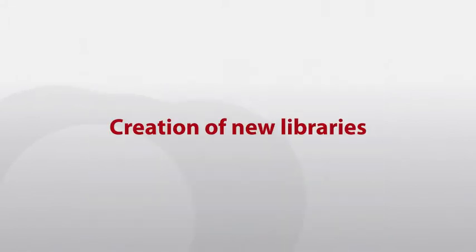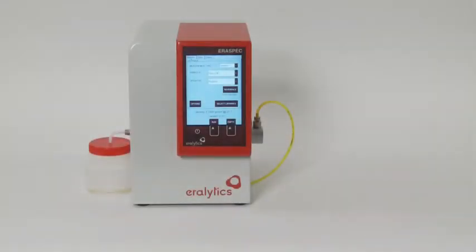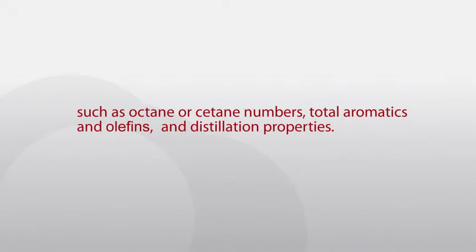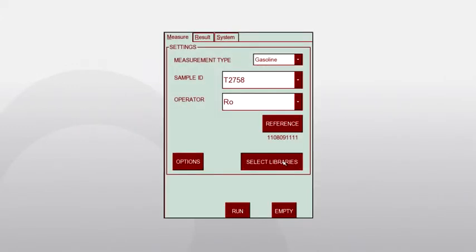To create new libraries, go to the Select Libraries option in the measure menu. AeroSpec uses a library or database to calculate results for complex parameters such as octane or cetane numbers, total aromatics and olefins, and distillation properties. The libraries store the spectra of typical samples together with the known values of these parameters as determined by the respective reference methods.